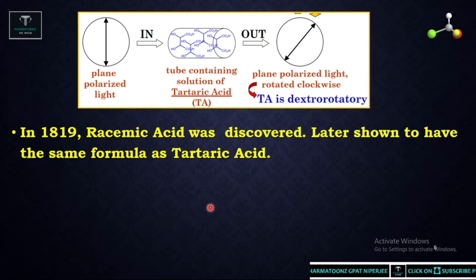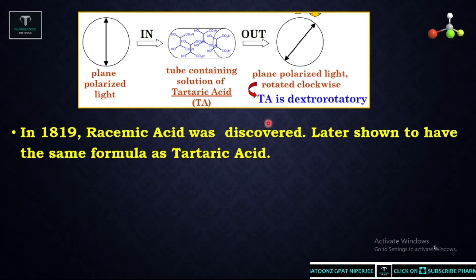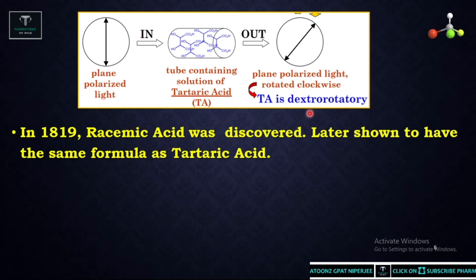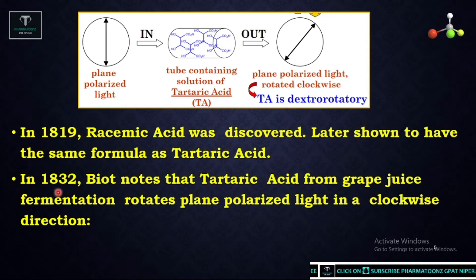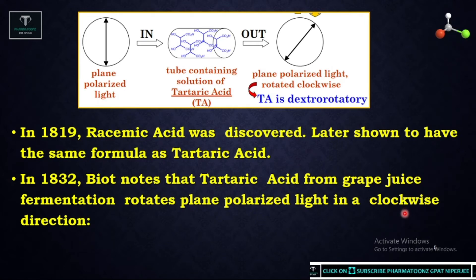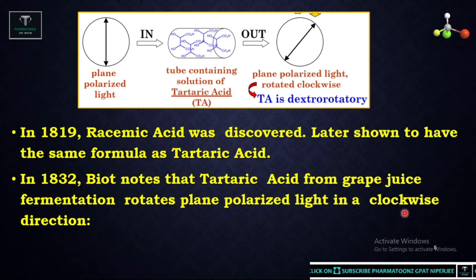In 1819, racemic acid was discovered and later shown to have the same molecular formula as tartaric acid. Tartaric acid was noted to be a dextrorotatory compound — meaning it rotates plane polarized light to the right side. In 1832, Biot noted that tartaric acid obtained from grape juice fermentation rotates plane polarized light in a clockwise manner, confirming it as a dextrorotatory compound.